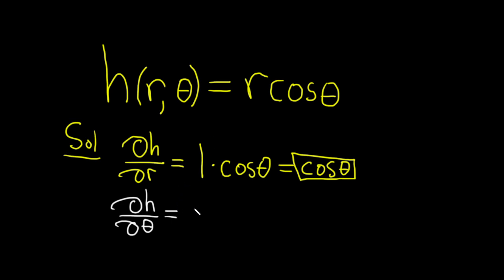When we're computing the partial with respect to theta, again, we have to treat all of the other variables as constants. So in this case, we're going to treat the r as a constant. So it simply hangs out. And then the derivative of cosine is negative sine. So parentheses, negative sine of theta.